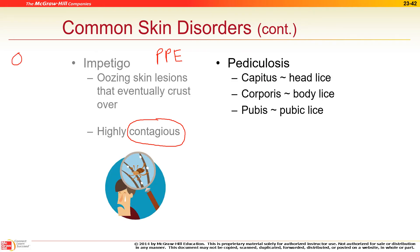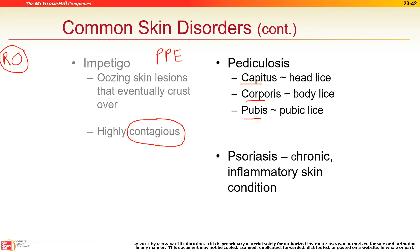An 'RO' sign outside a patient's door stands for Resistant Organism — a superbug — don't even open the door. Head lice: 'capitis' means on the head, 'corporis' means on the body, 'pubis' means in the pubic region. Because lice are multicellular, this is called an infestation, not an infection.